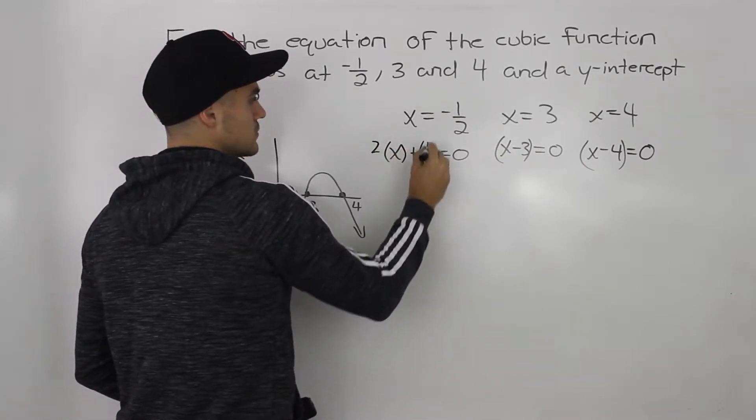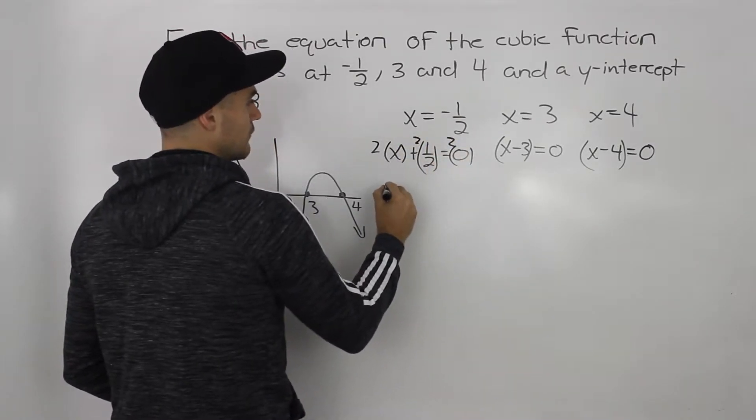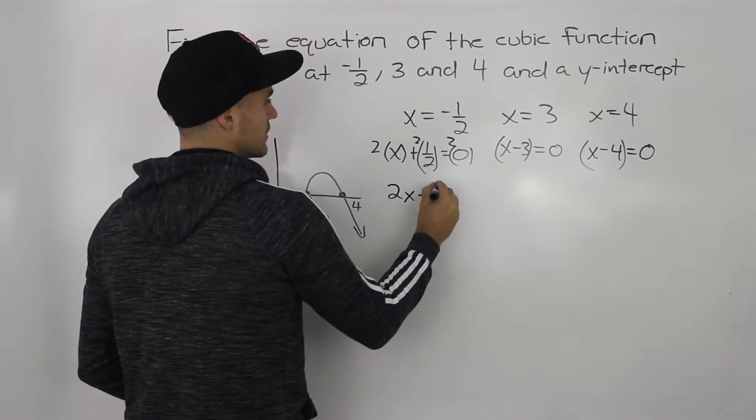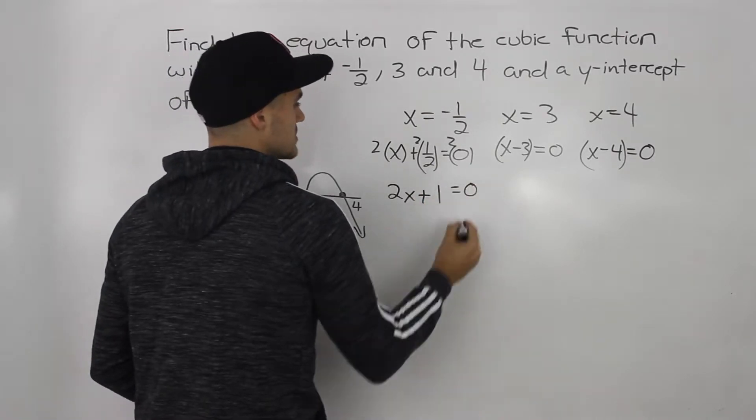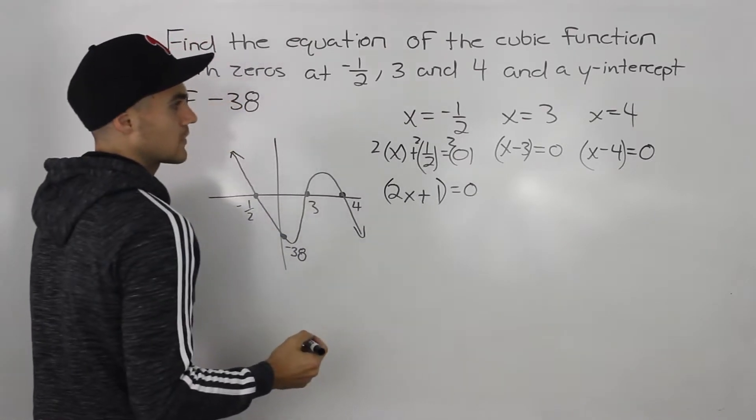So we can multiply this x by two, we can multiply this half by two, we can multiply this zero by two, and we'd be left with 2x plus 1 equals zero. Right? So that is another factor right there.